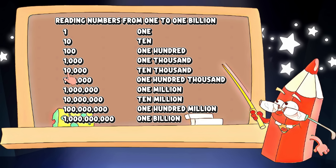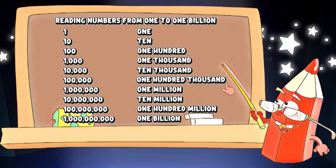One hundred: two zeros. In ten thousand, we have one, two, three, four zeros. In one hundred thousand, there are five zeros.